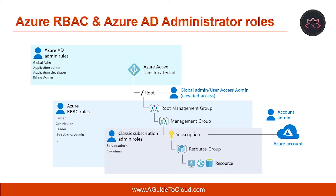When Azure was initially released, access to resources was managed with just three admin roles: account administrator, service administrator, and co-administrator. Later, role-based access control for Azure resources was added. Azure RBAC is a newer authorization system that provides fine-grained access management to Azure resources. RBAC includes many built-in roles, can be assigned at different scopes, and allows you to create your own custom roles as well. To manage resources in Azure AD — such as users, groups, and domains — there are also several Azure AD administrative roles.